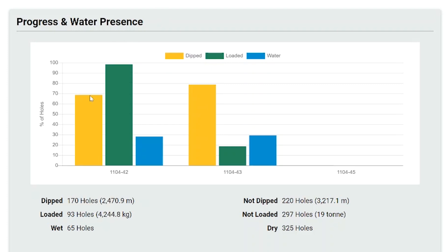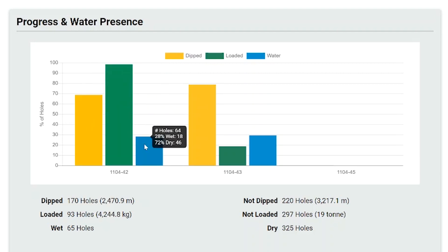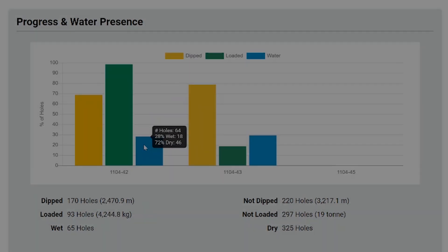You can hover over the bars to view specific metrics, such as the number of holes and the quantity of product, as well as view these metrics across all selected blasts in the summary at the bottom of the chart.